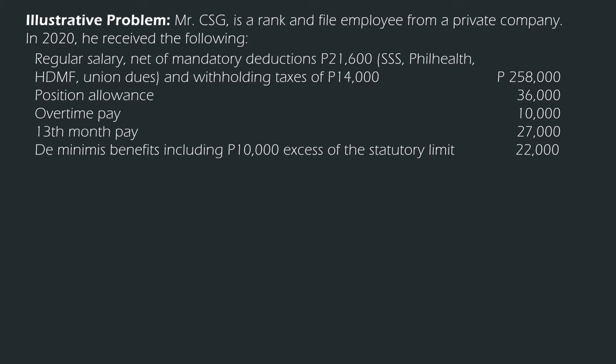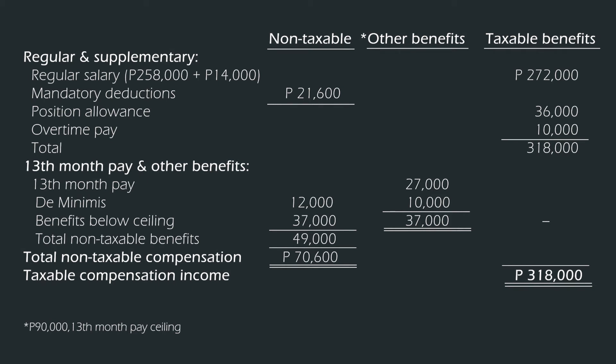To start, the total taxable benefits shall comprise the regular salary upon adding back the tax withheld. We will segregate the mandatory deduction of 21,600 pesos as part of the non-taxable compensation. The next portion of the computation is the 13th-month pay and other benefits. The de minimis benefits within the limit shall be included as non-taxable benefits, while the excess shall be included as other benefits. Notice that the excess of the de minimis was combined with the 13th-month pay and compared to the 90,000-peso limit.